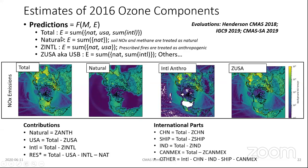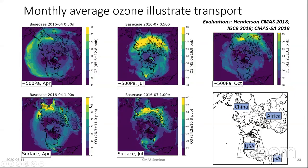Starting with the average transport to give a sense of what we're talking about, we're looking at the aloft measurements. In April, the clear transport pathways are visible. By July, it's more disturbed. In October, it's still disturbed. And at the surface, in April the transport pathway is more clear than in July.